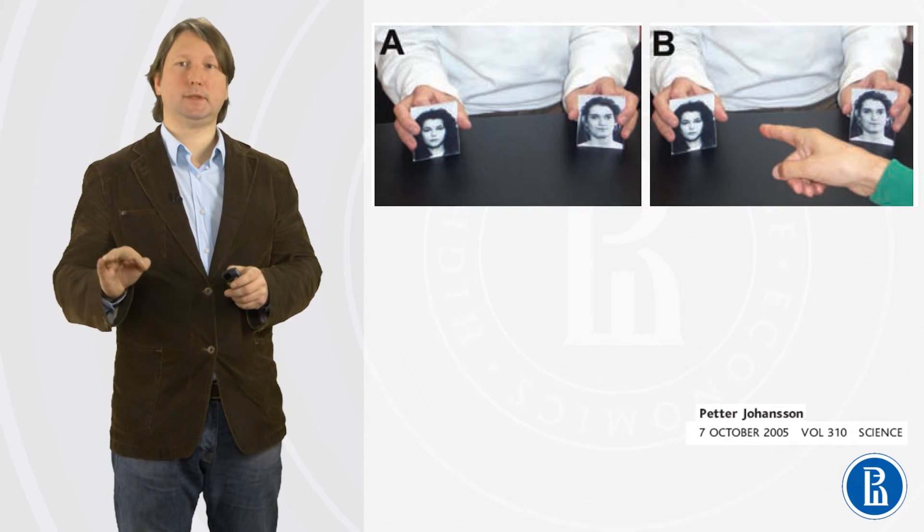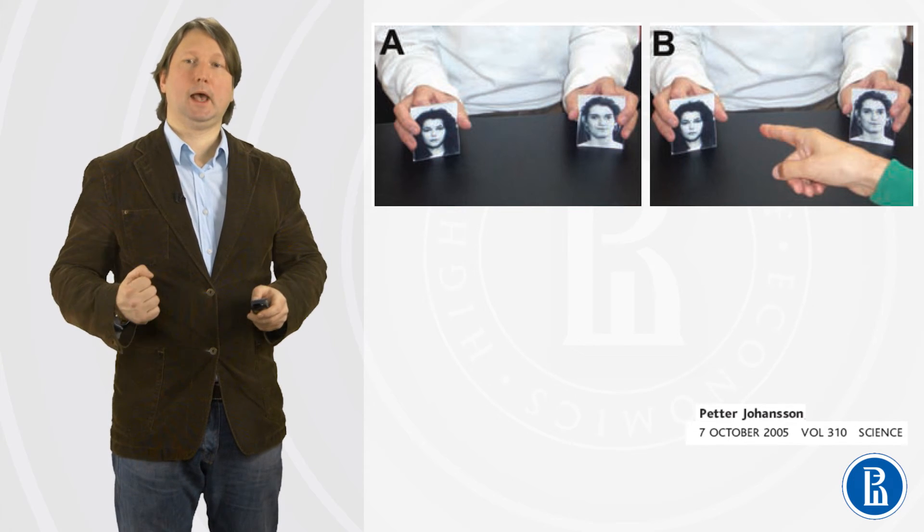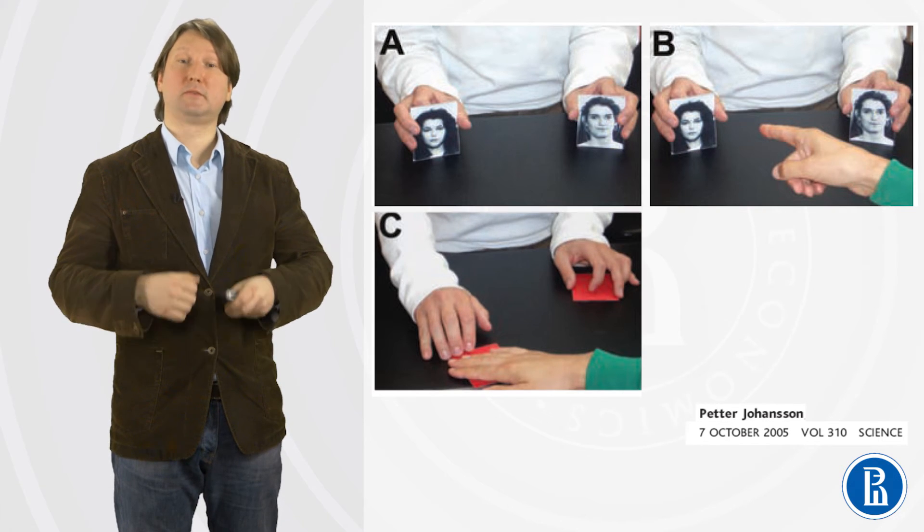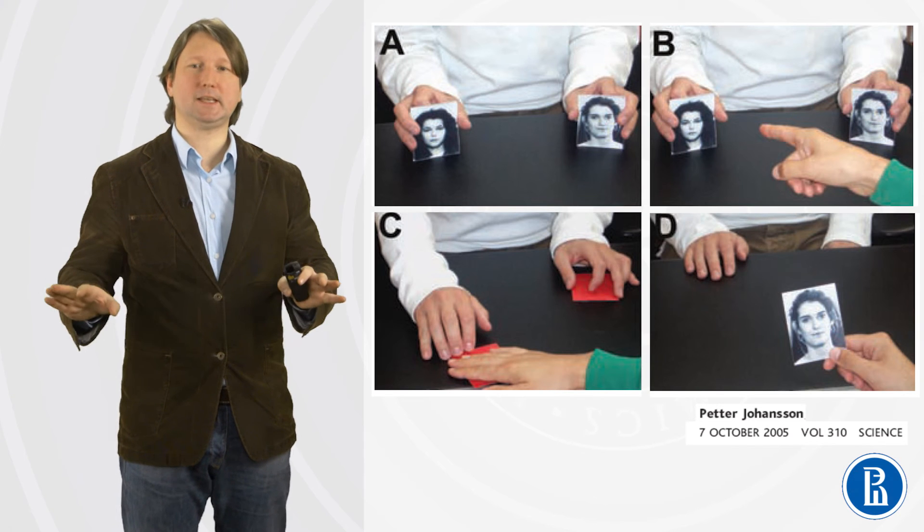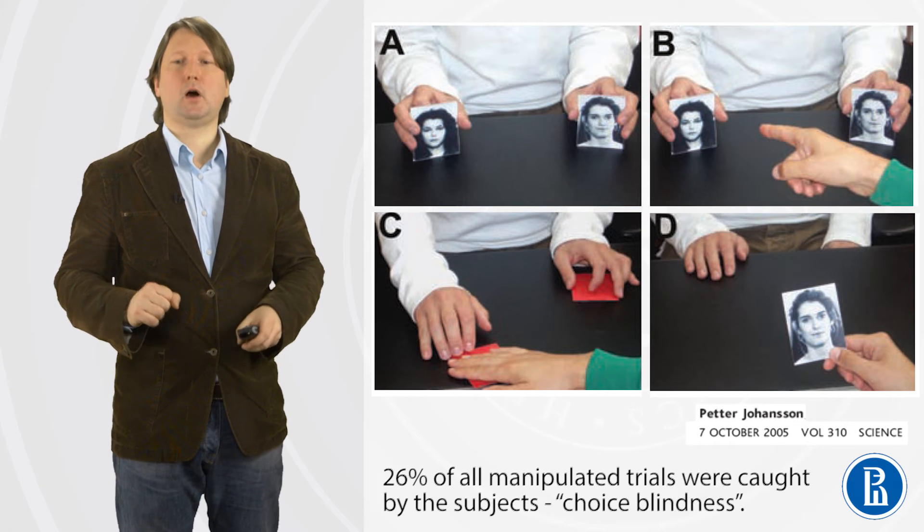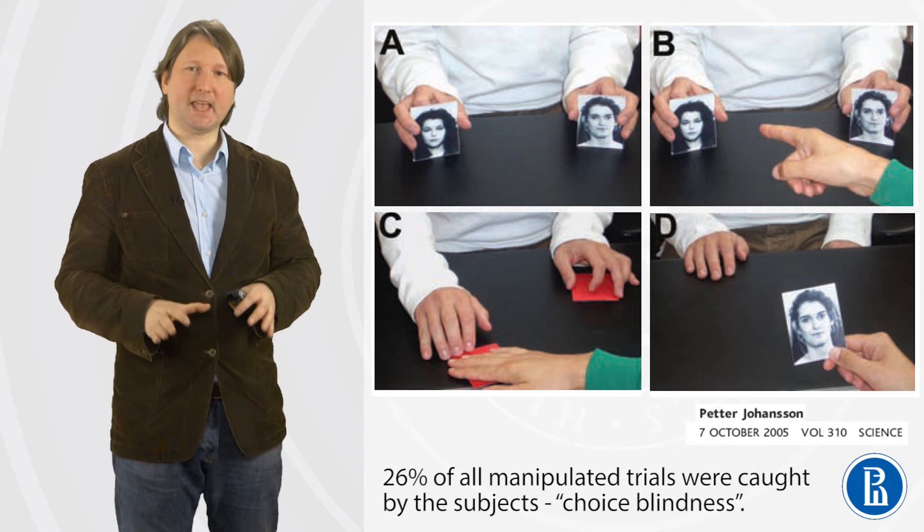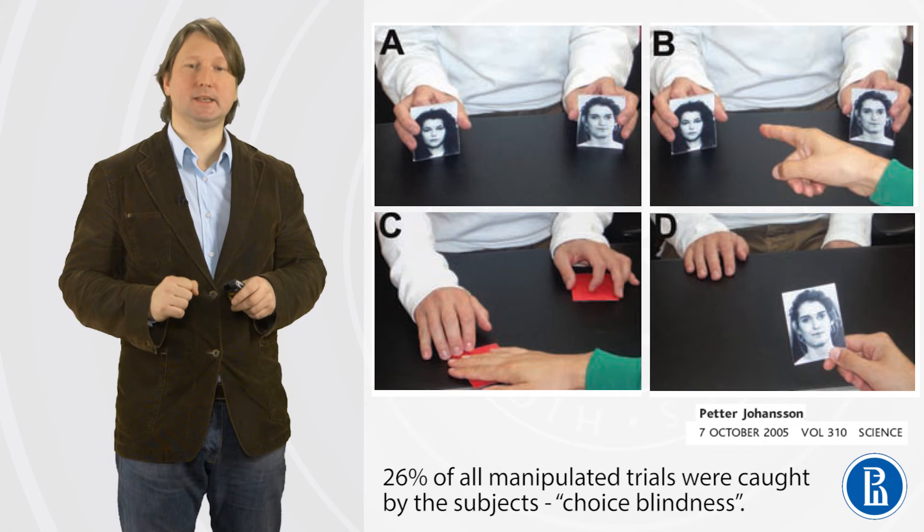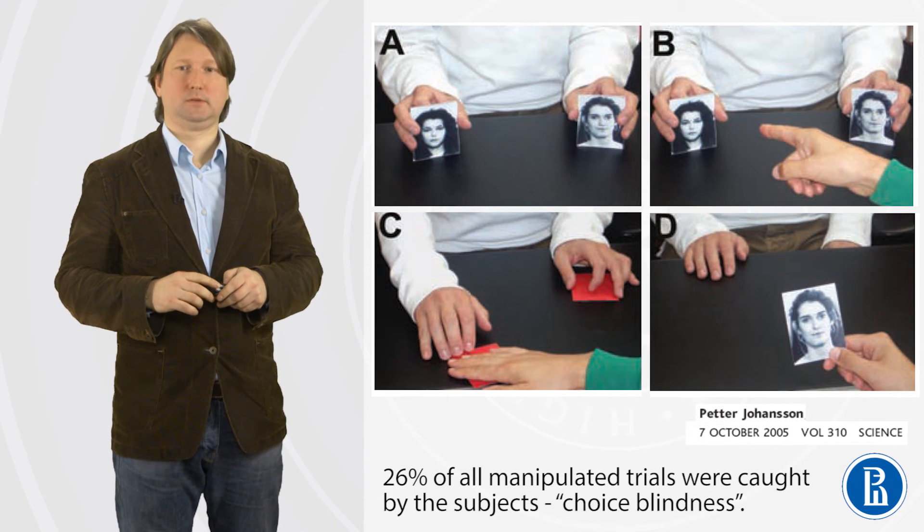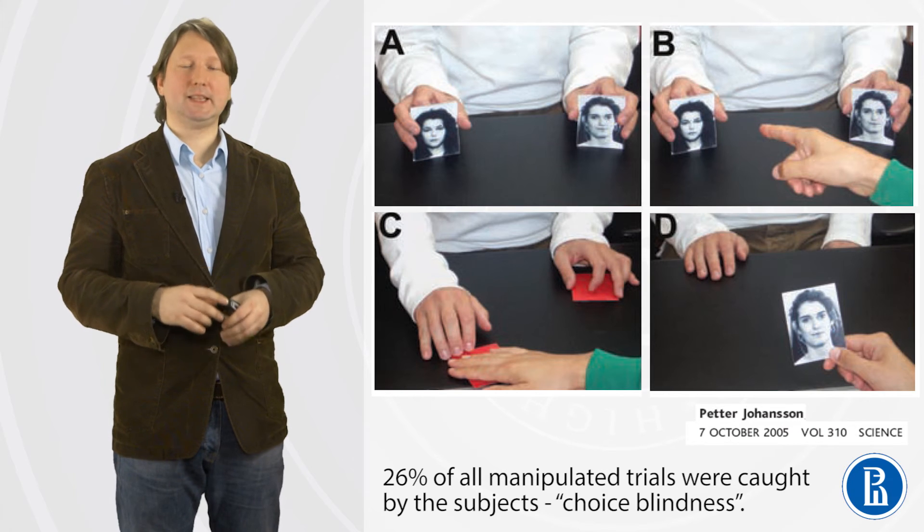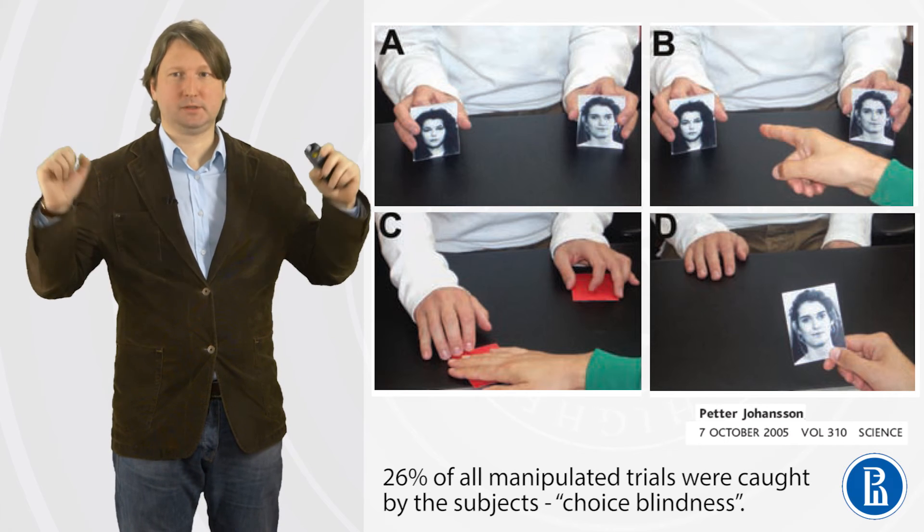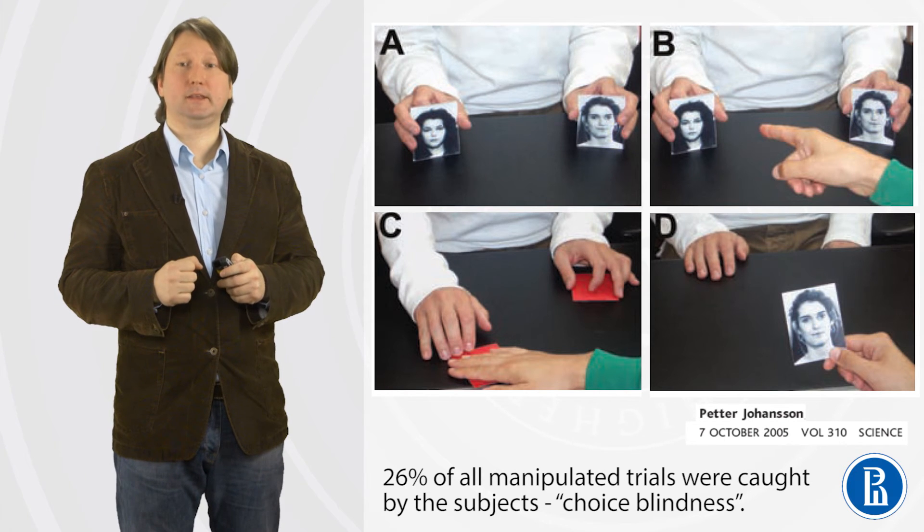But experimentator manipulates photos, and instead of left photo, gives right photo. So subject never selected right photo, but she gets this photo. What happens? Only in 26% of the trials people recognize that they haven't made this choice. Most of the people blindly accept this kind of choice they never made.